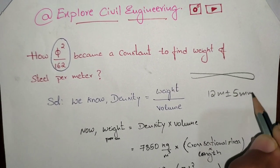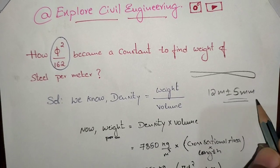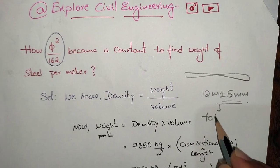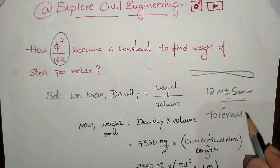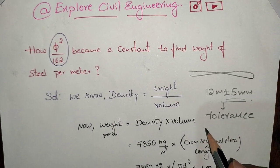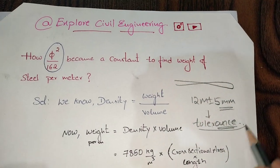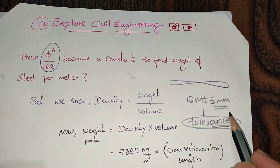So here 5mm is the tolerance value. Tolerance is given because it was machine made which happens in industries, so there is no perfect accuracy. That's the reason why 5mm is the tolerance value.